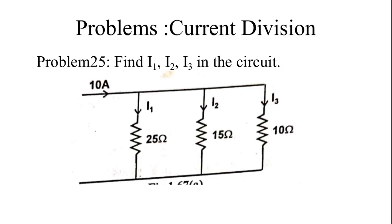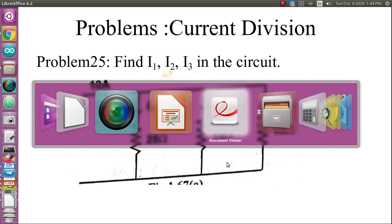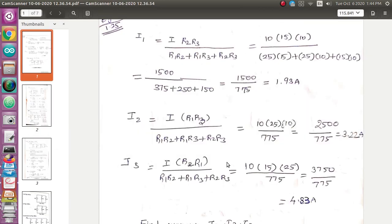We are going to see three or four problems in the current division rule so that it will be very clear. This is the 25th problem: find i1, i2, i3 in the circuit. The circuit is given here and you have to find i1, i2, i3. Using the formula of the current division rule, I have derived i1, i2, and i3.